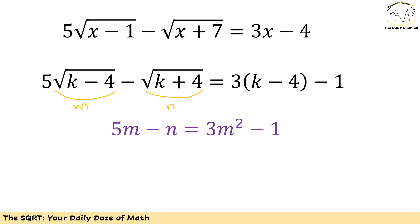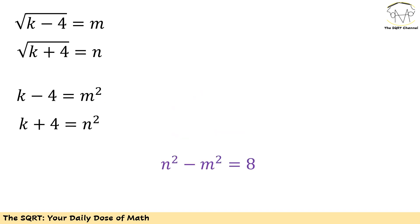How are we going to use this dependency? If I square both definitions, I get k minus 4 equals m squared and k plus 4 equals n squared. Now if I compute n squared minus m squared, I can eliminate k, and I end up with n squared minus m squared equals 8.